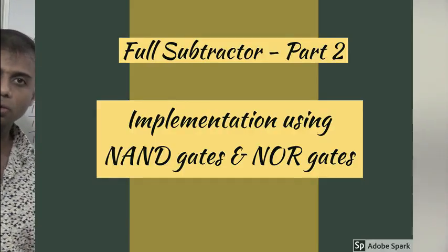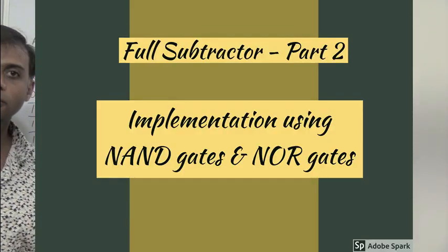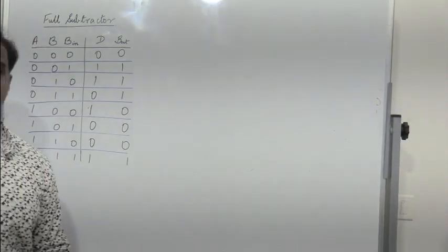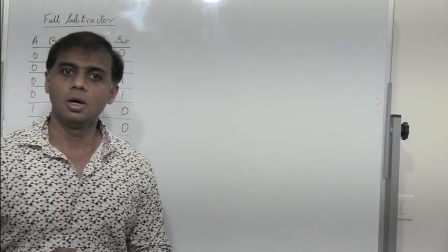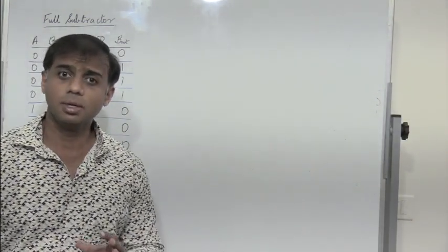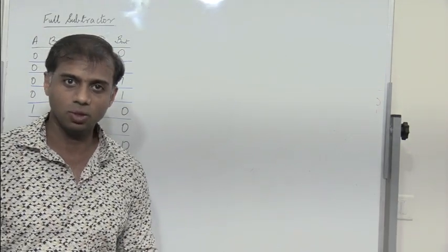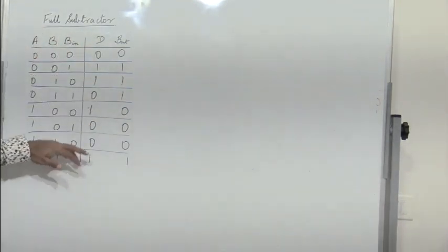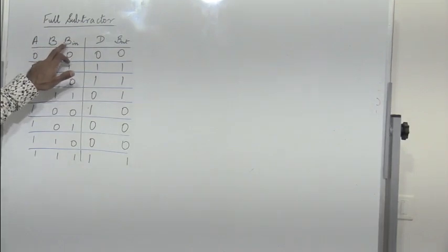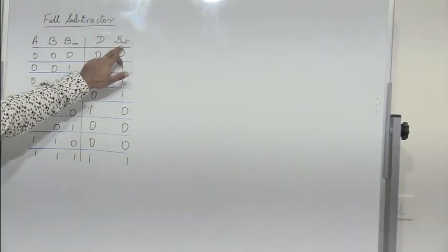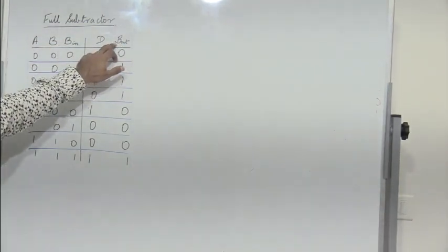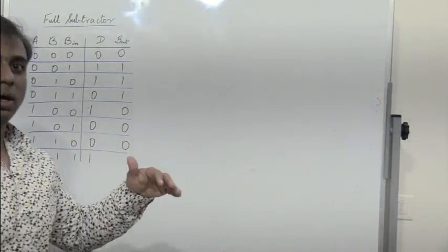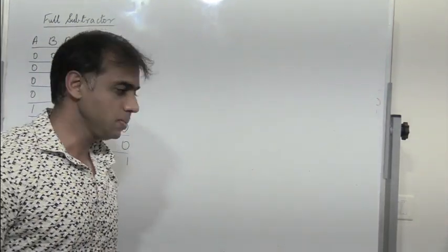We have seen the working of the full subtractor in the previous video segment. In this session we will see how a full subtractor can be realized using NAND and NOR gates only. This is the truth table of a full subtractor, with three inputs A, B, and Bin, giving difference and borrow out. How to get the truth table, we have already seen that in the previous session.